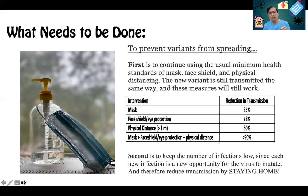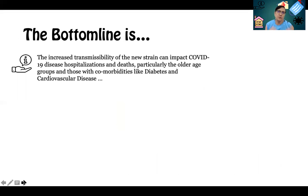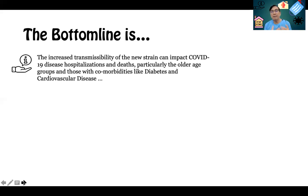Second, it is very important that if we want to keep the number of infections low — since each new infection is a new opportunity for the virus to mutate — we play a part in reducing transmission by staying home. The increased transmissibility of this new strain can definitely impact COVID-19 hospitalizations and deaths, particularly among older age groups and those with comorbidities such as diabetes, chronic cardiovascular disease, and kidney disease.